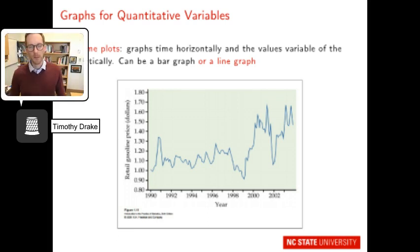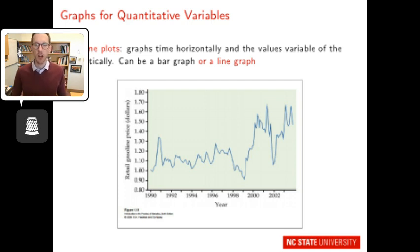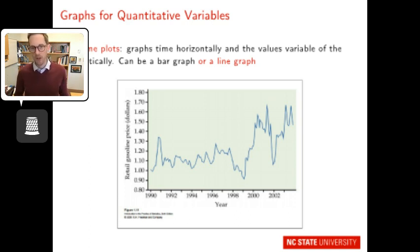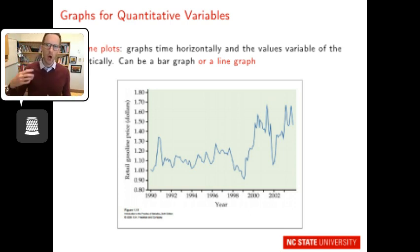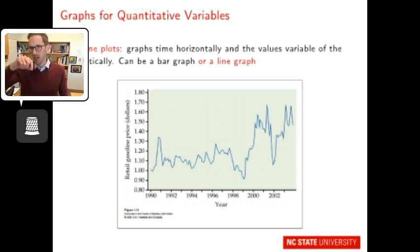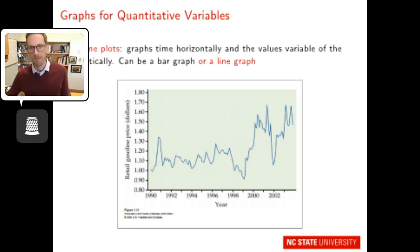Another great graphical representation, especially for longitudinal data, is a time plot. Time graphs plot time horizontally and the values of the variable vertically, and can be a bar graph or a line graph. This example from your book is a line graph showing the retail price of gasoline in dollars from 1999 to about 2004. You can see the price spikes over time, and you might add flags to indicate events like an oil embargo that caused a price hike.